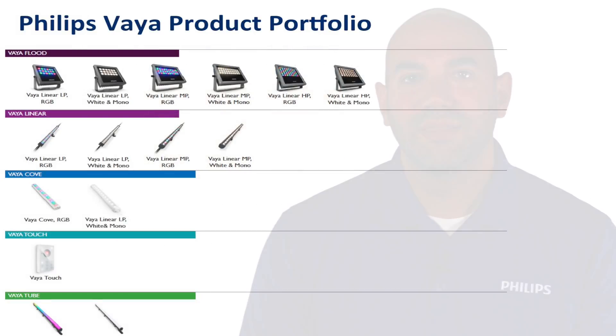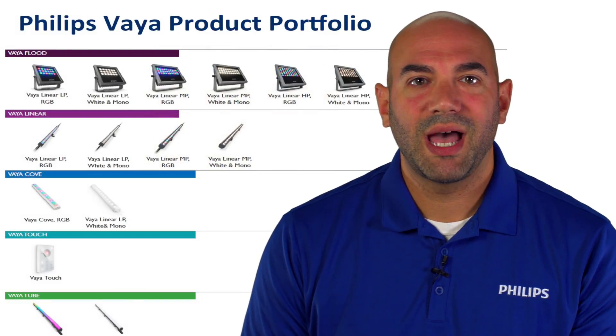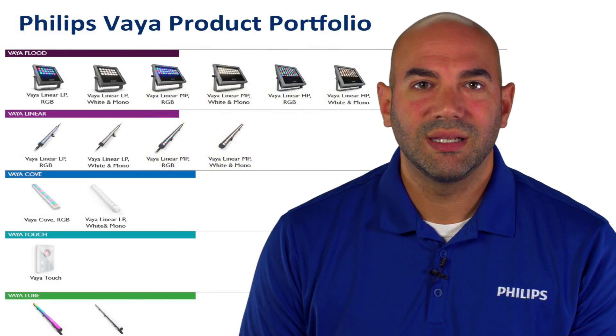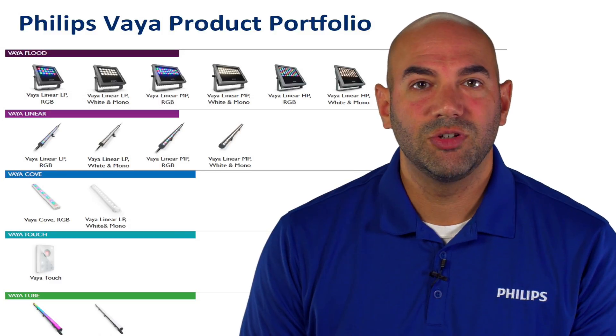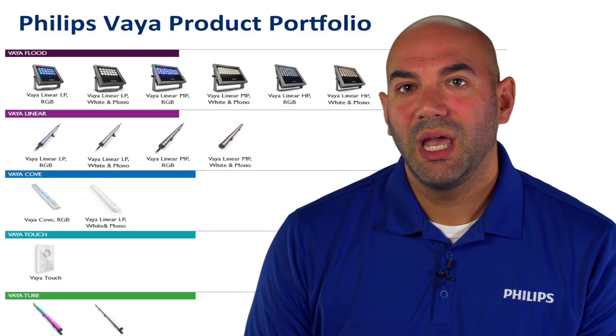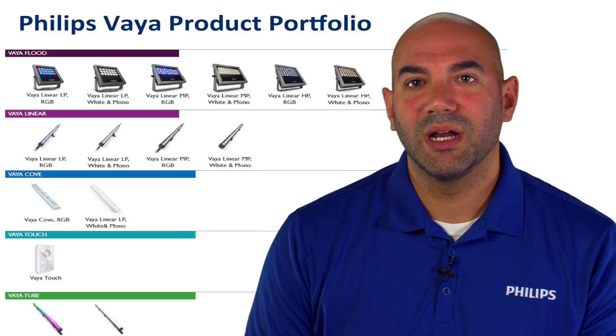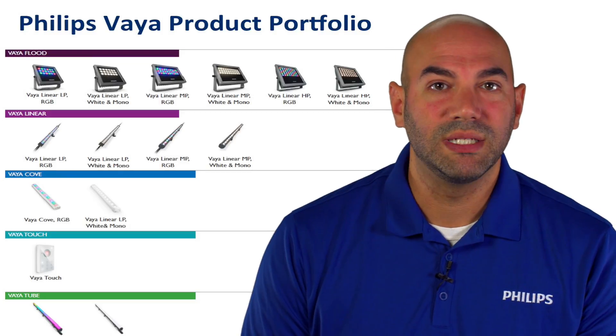The Philips VIA portfolio is also divided by application and light type. Color changing luminaires are RGB, and static luminaires are monocolor or white.